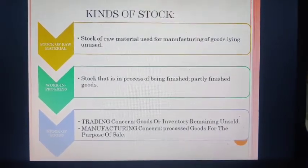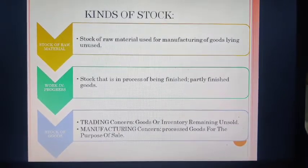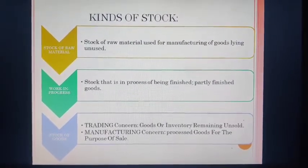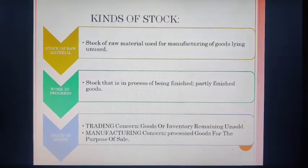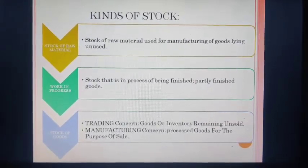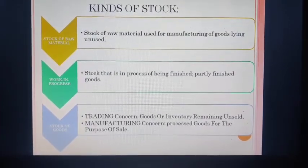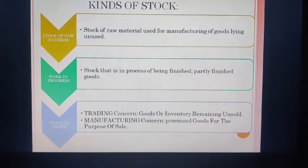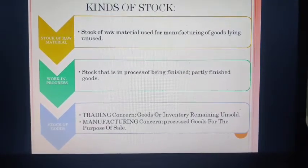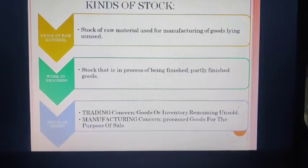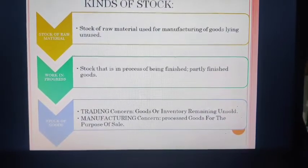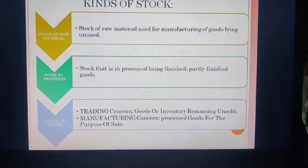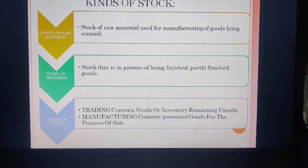Stock of goods for a trading concern — a trading concern is one that only deals in trading of goods. Goods or inventory remaining unsold becomes stock of goods. For a manufacturing concern, it becomes processed or finished goods manufactured for the purpose of sale. So we have three kinds of stock: stock of raw material, stock of work in progress, and stock of finished goods. Raw material when processed becomes work in progress, and ultimately becomes finished goods.